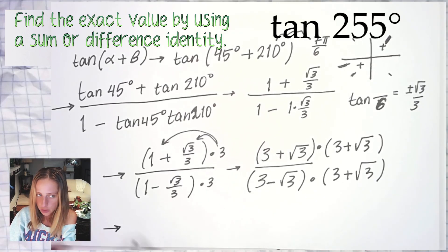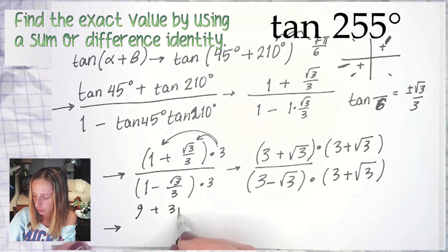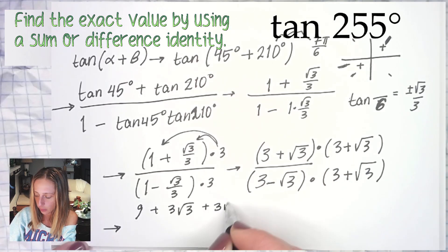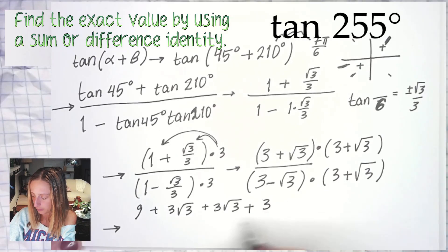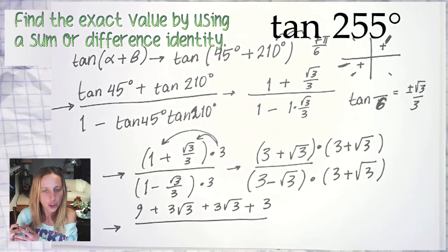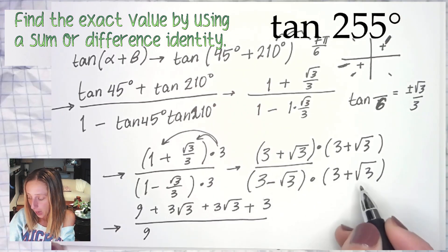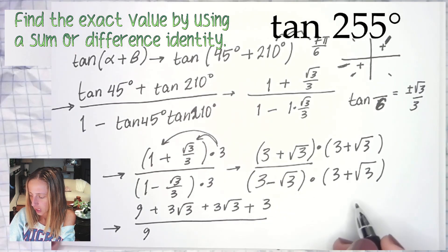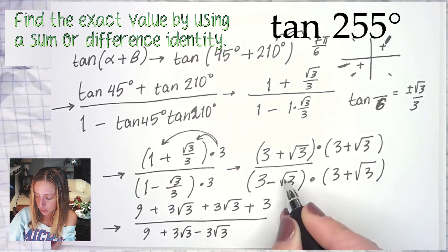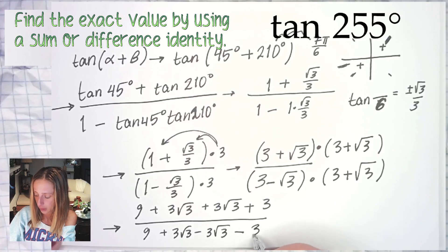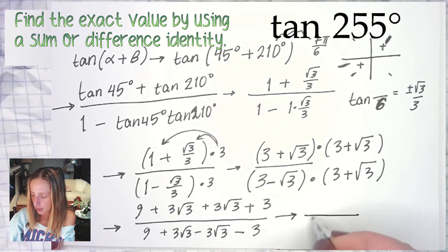In order to multiply, we are going to apply distribution or the mnemonic device some of you may want to call it, FOIL. So we'll do that right over here. First times first is 9, outer is plus 3√3, inner also 3√3, plus √3 times √3 is √9, and √9 is 3. Over, the beauty of conjugates being multiplied together is your outer and your inner will always cancel out, become zero. So first times first is 9, outer will be plus 3√3, inner is minus 3√3, and then last times last, negative times a positive this time is negative √3.